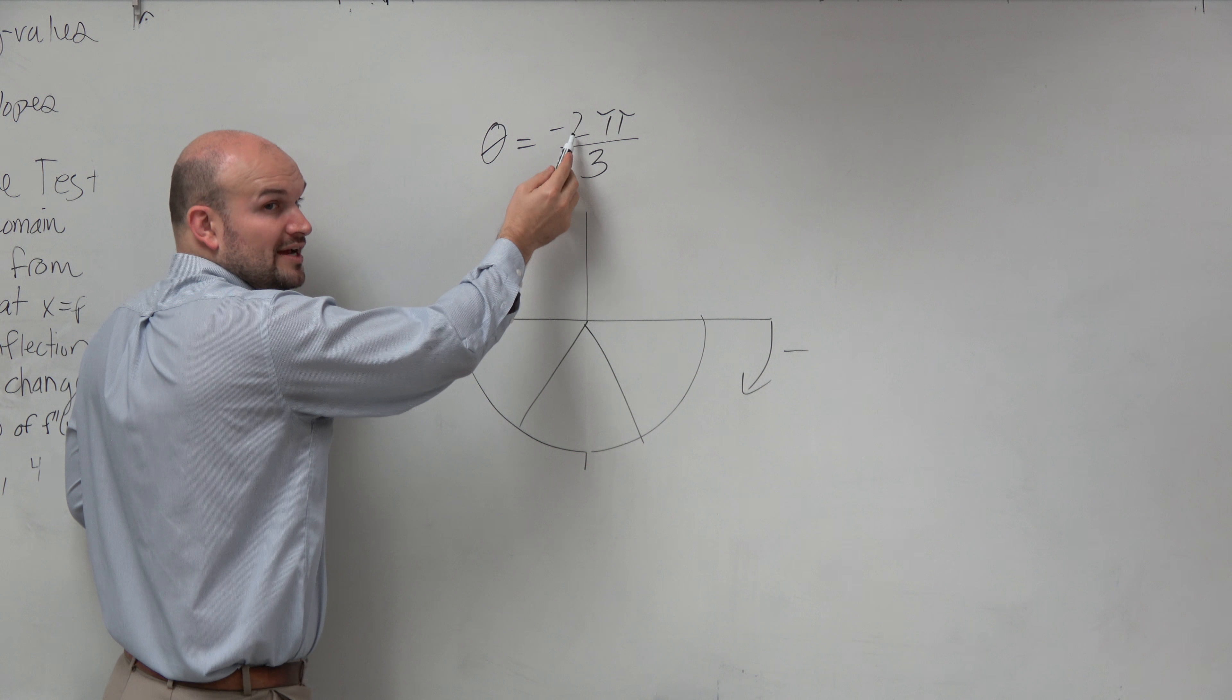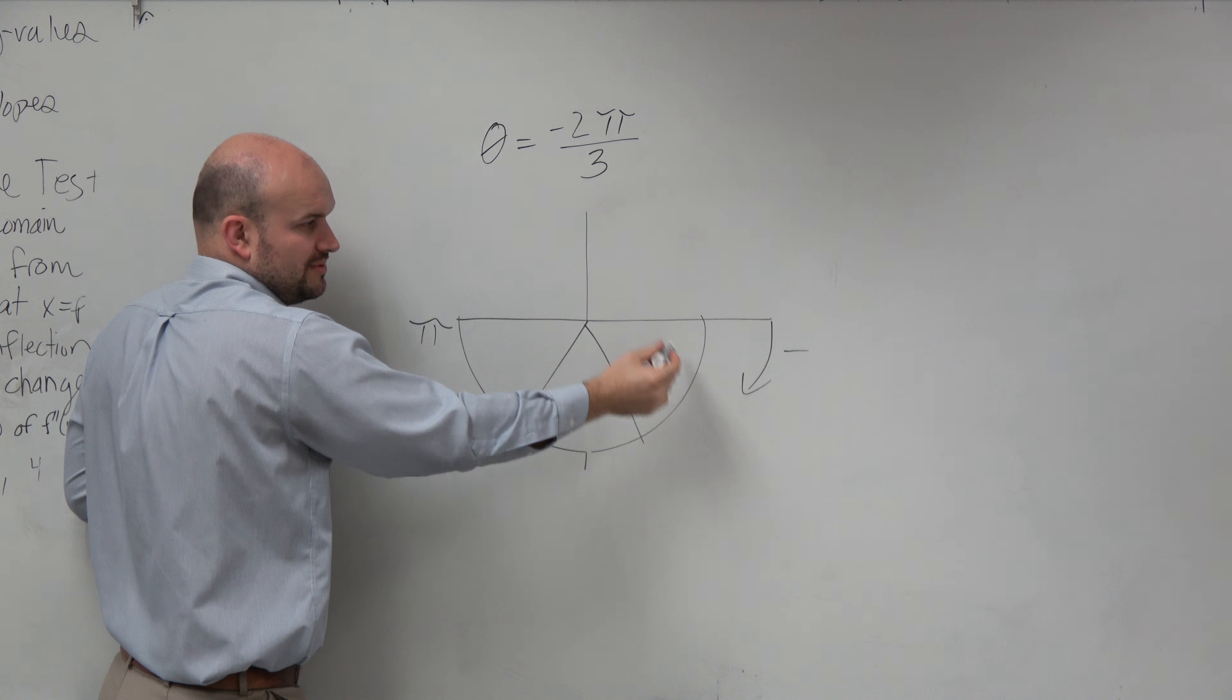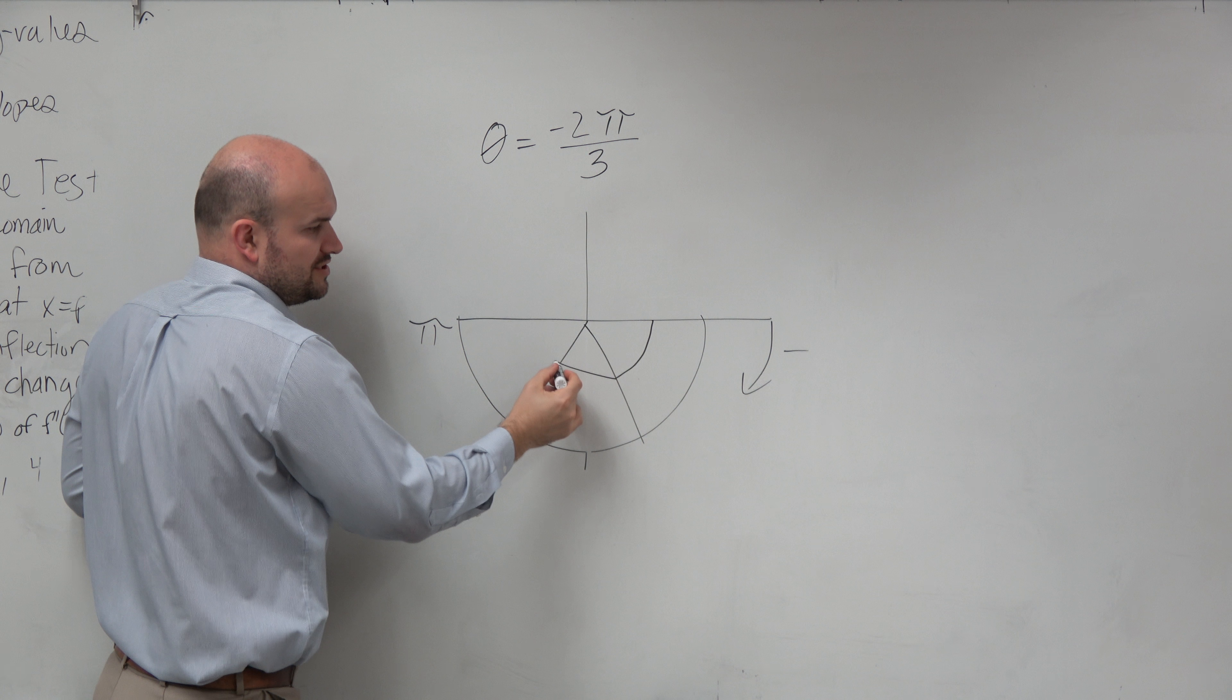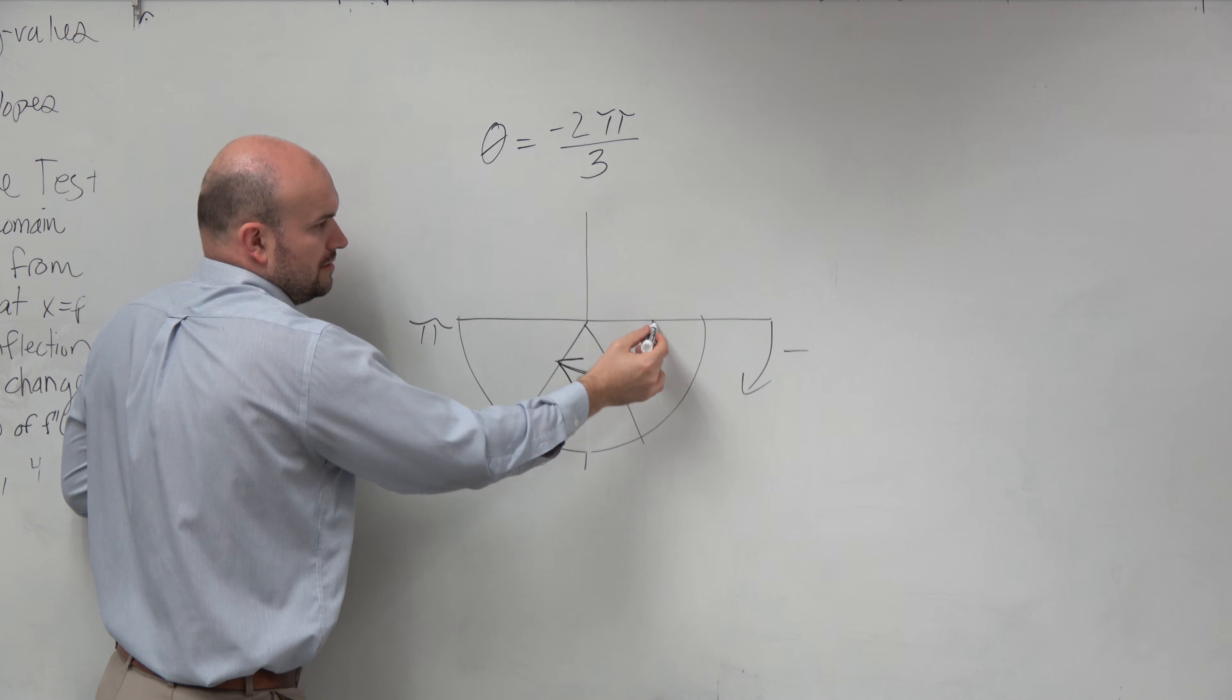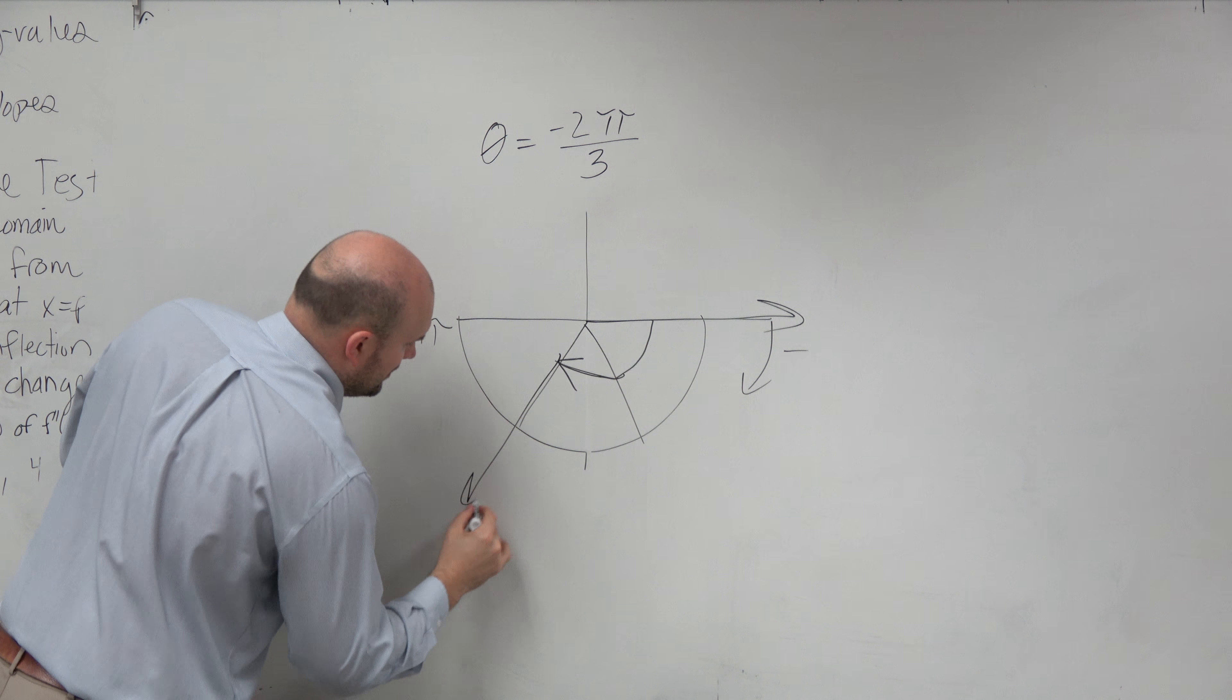We only want to graph an angle that's two of those thirds in the negative direction, which is this way. So that's one third, that's two thirds. Here's my angle.